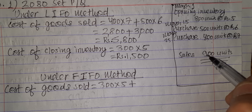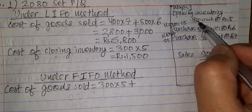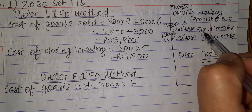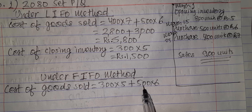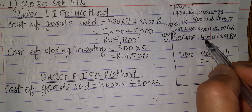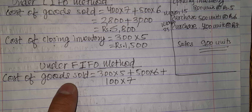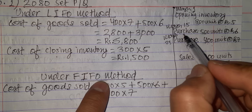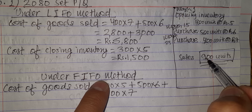With 900 units to be sold and 300 units from opening inventory already accounted for, we still need 600 more units. From March 15 purchase (500 units at Rs. 6), we take all 500 units. We still need 100 more units, taken from March 25 at Rs. 7. So total: 300 units @Rs.5, plus 500 units @Rs.6, plus 100 units @Rs.7.